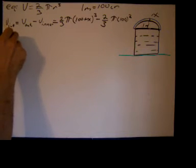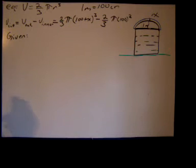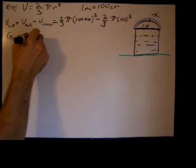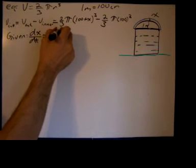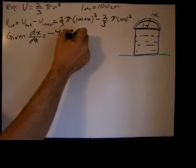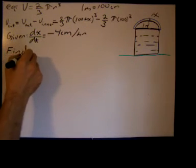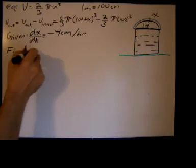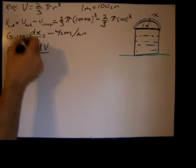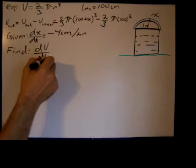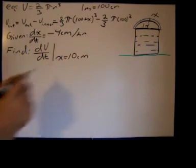Now we'll talk about what we're given. We were given the rate at which the ice is decreasing, so dx/dt equals negative 4 centimeters per hour — negative because it's decreasing. And we want to find dV/dt, the rate at which the volume is changing, when x equals 10 centimeters.